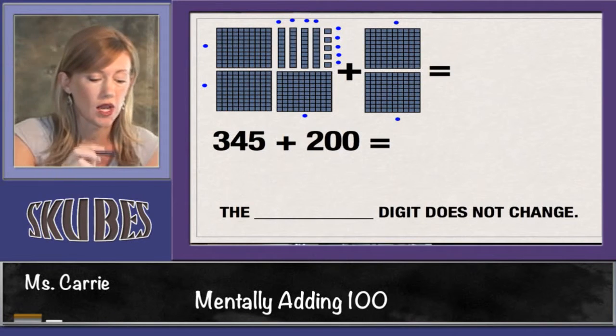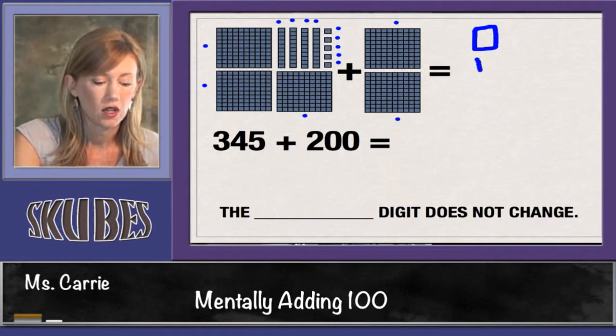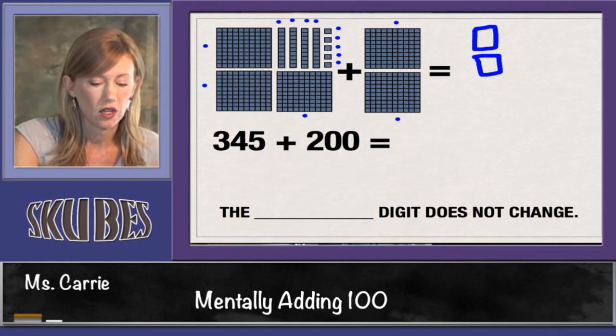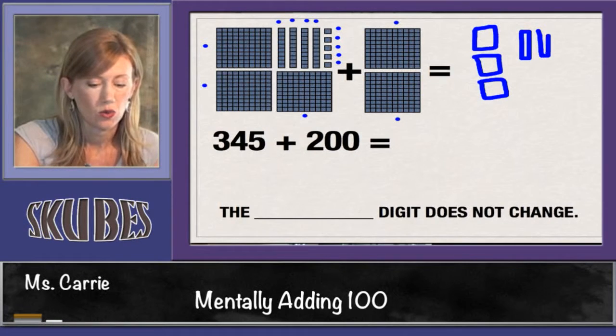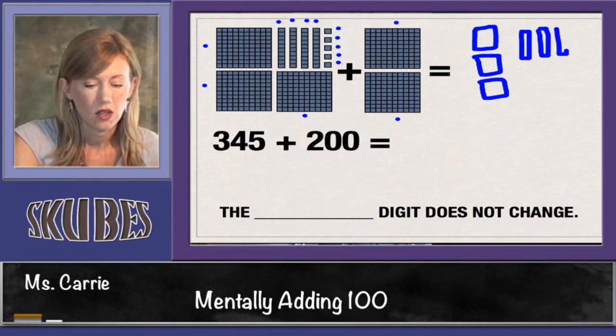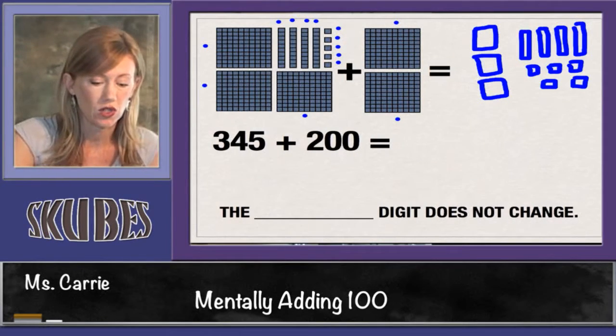Let's draw it out one more time. So we said 100, 200, 300, and 10, 20, 30, 40, 41, 42, 43, 44, 45 plus 200.